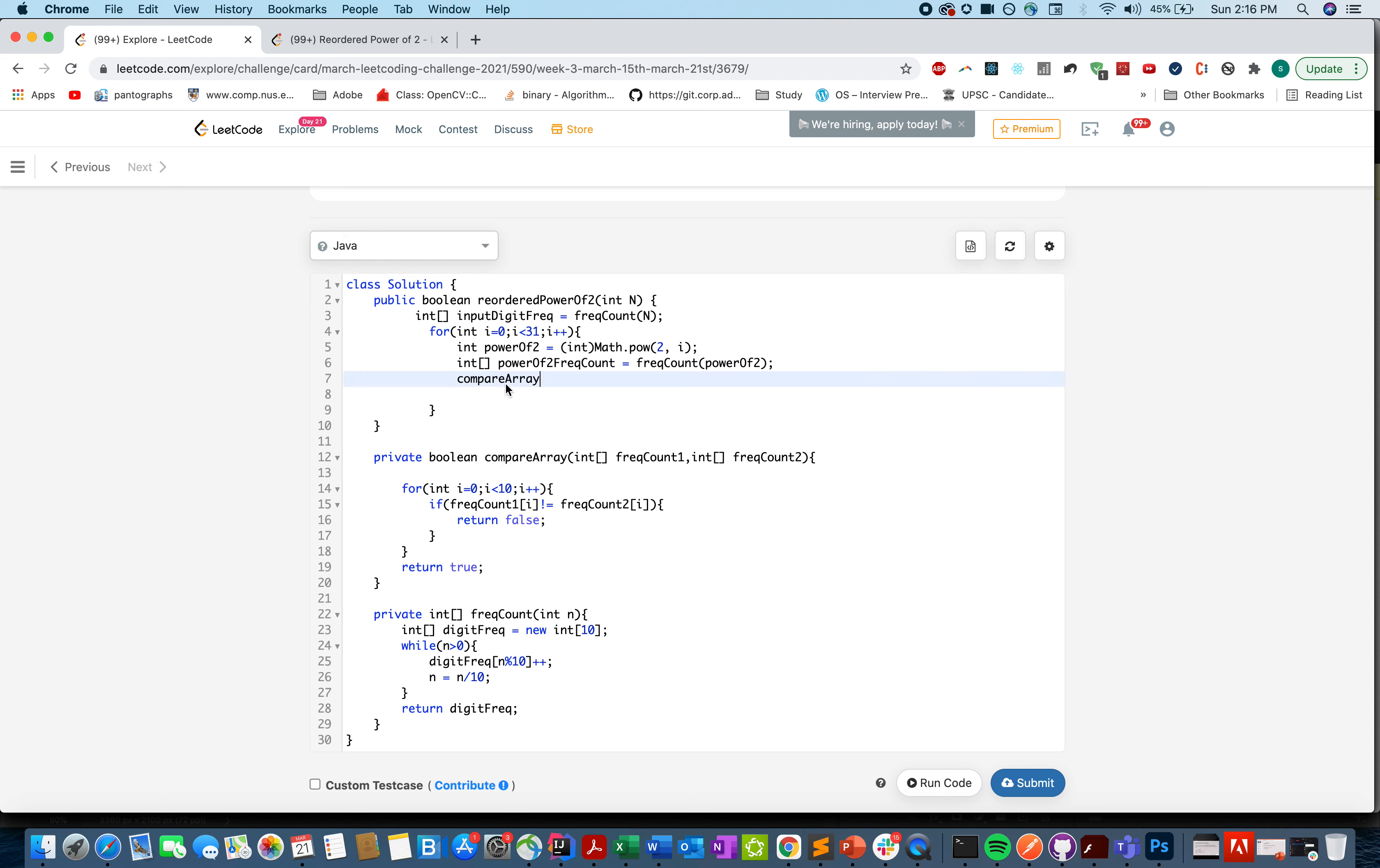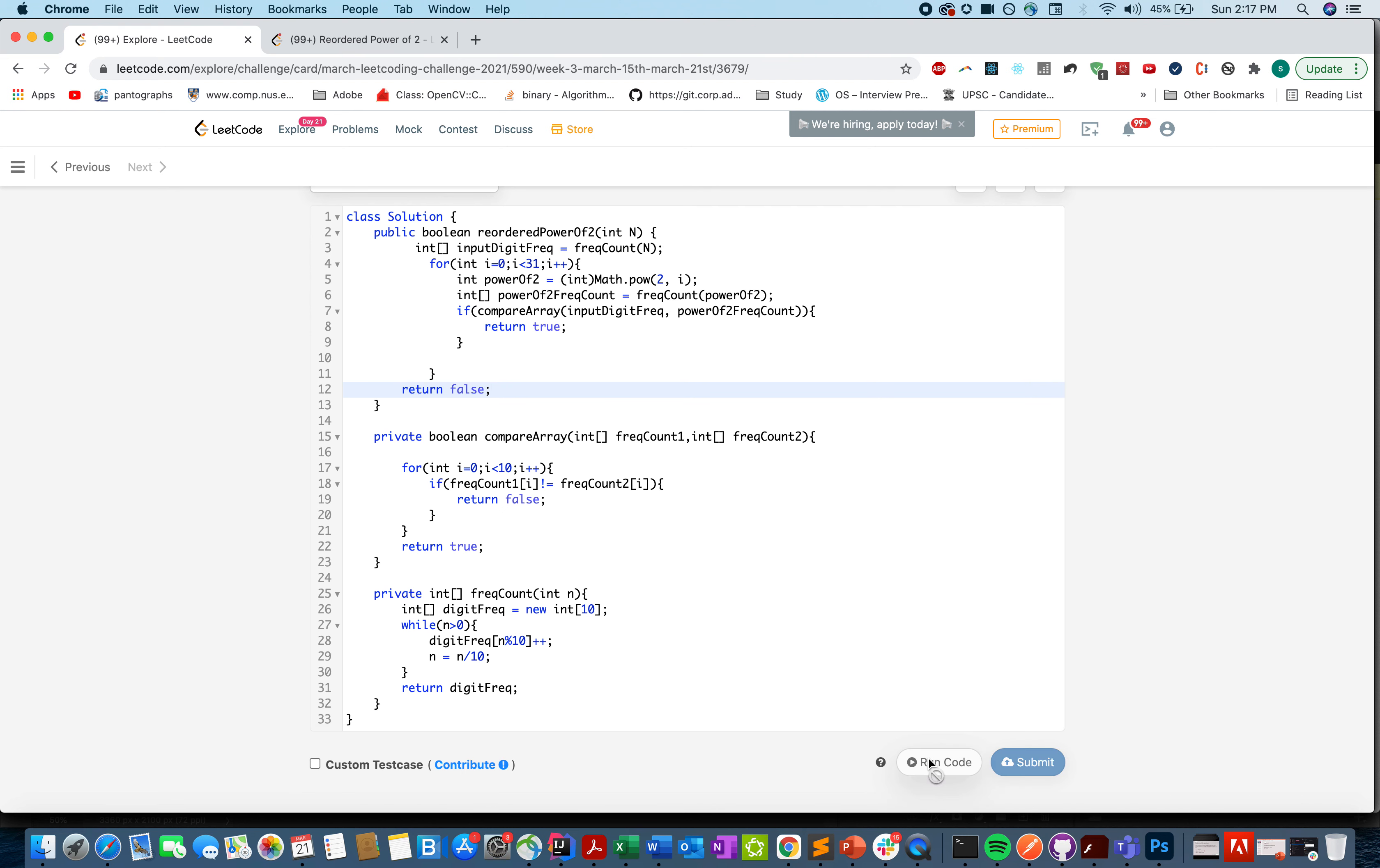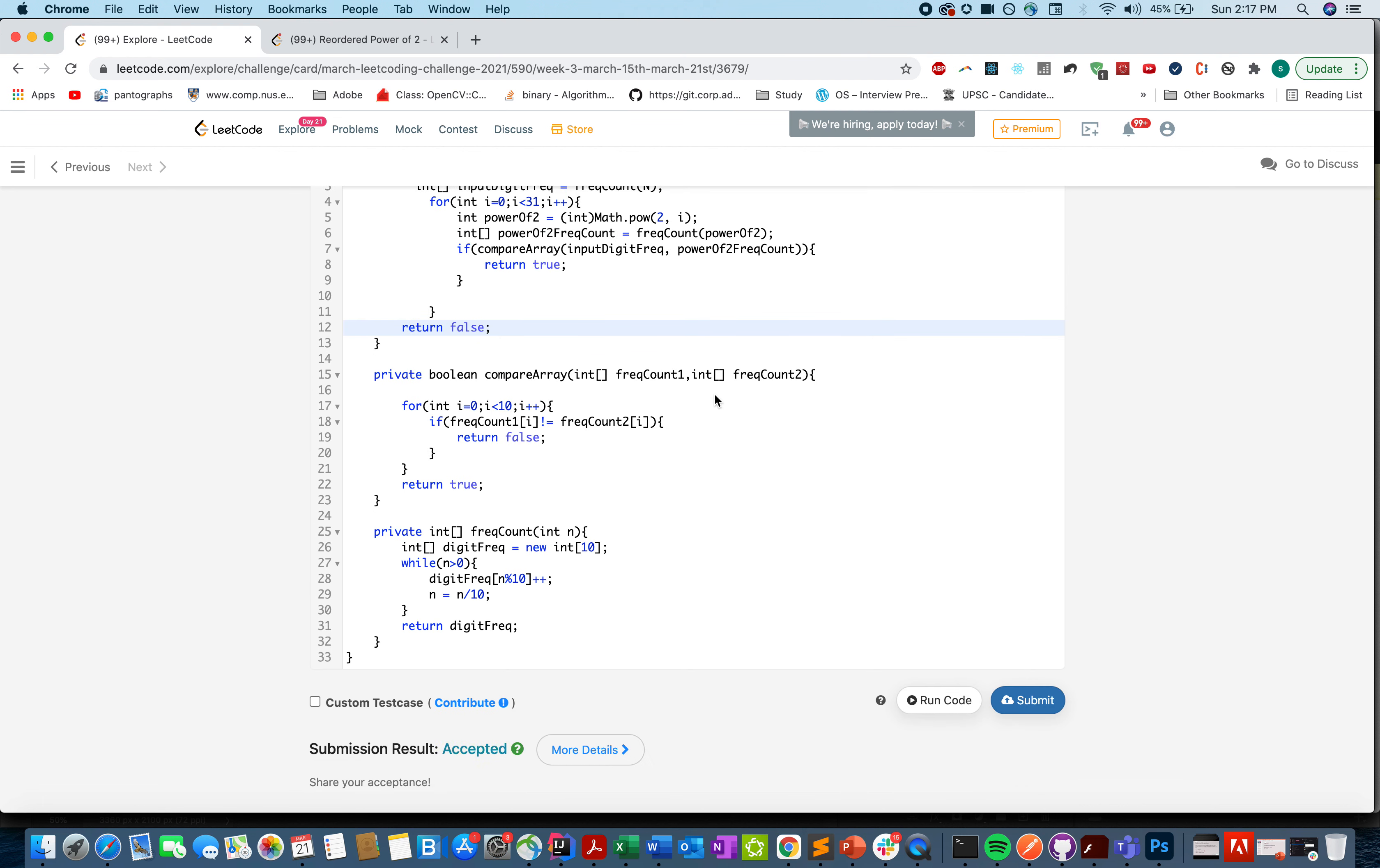Let's call this for the input. If frequency and powerOf2FrequencyCount, if this happens to be true, if this returns true, then my answer is true, otherwise it's false. Nothing fancy about the code, just a few modularized methods so that it makes it better readable. Accepted!